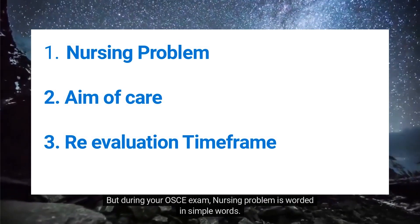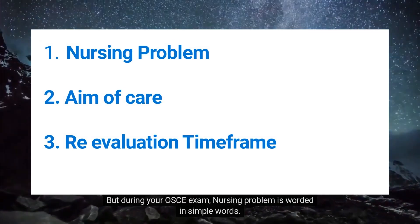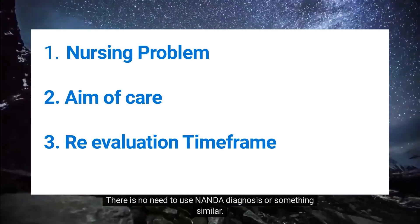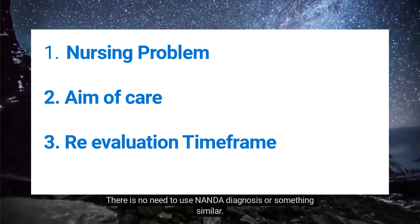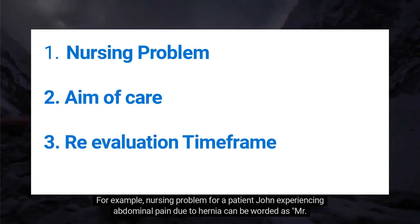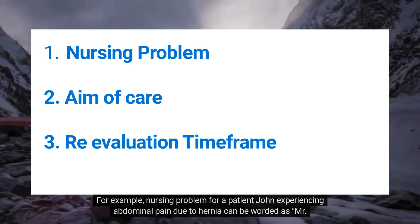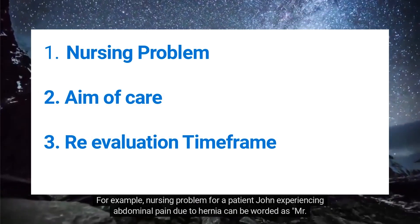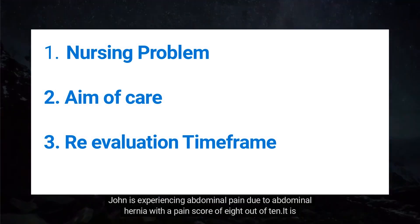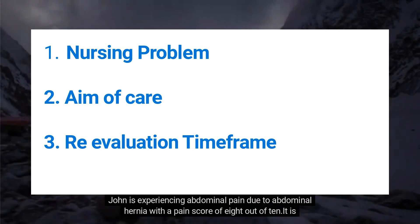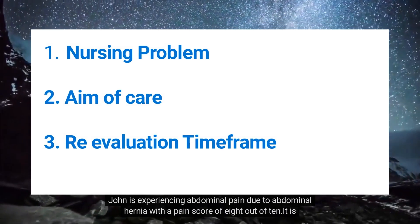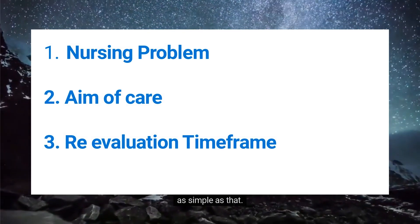But during your OSCE exam, the nursing problem is worded in simple words. There is no need to use NANDA diagnosis or something similar. For example, the nursing problem for a patient John experiencing abdominal pain due to hernia can be worded as: Mr. John is experiencing abdominal pain due to abdominal hernia with a pain score of 8 out of 10. It is as simple as that.